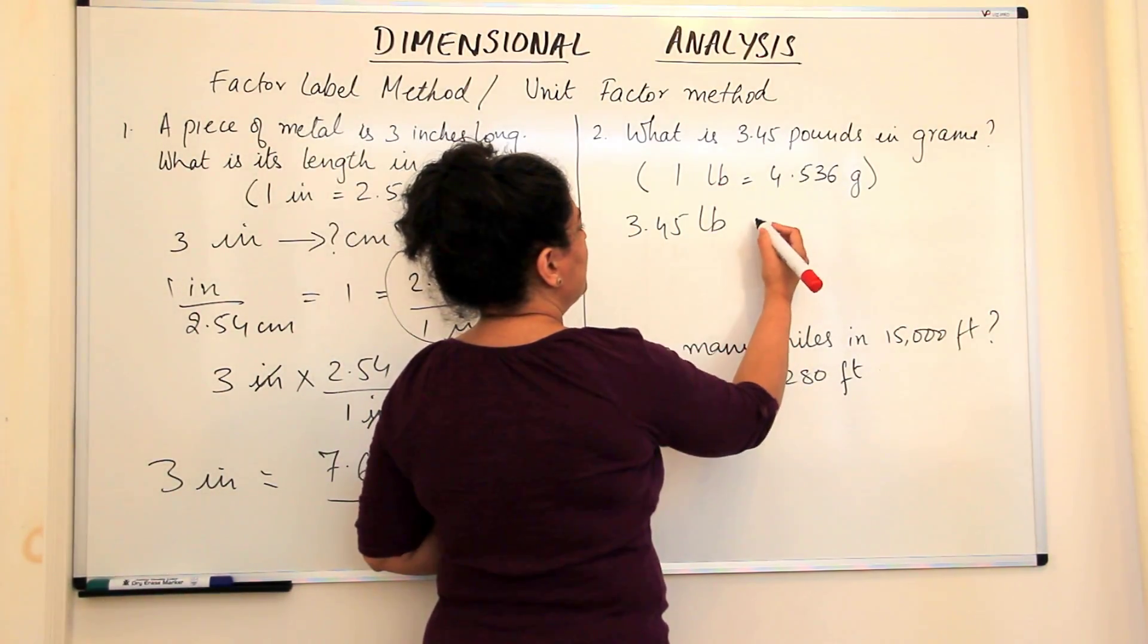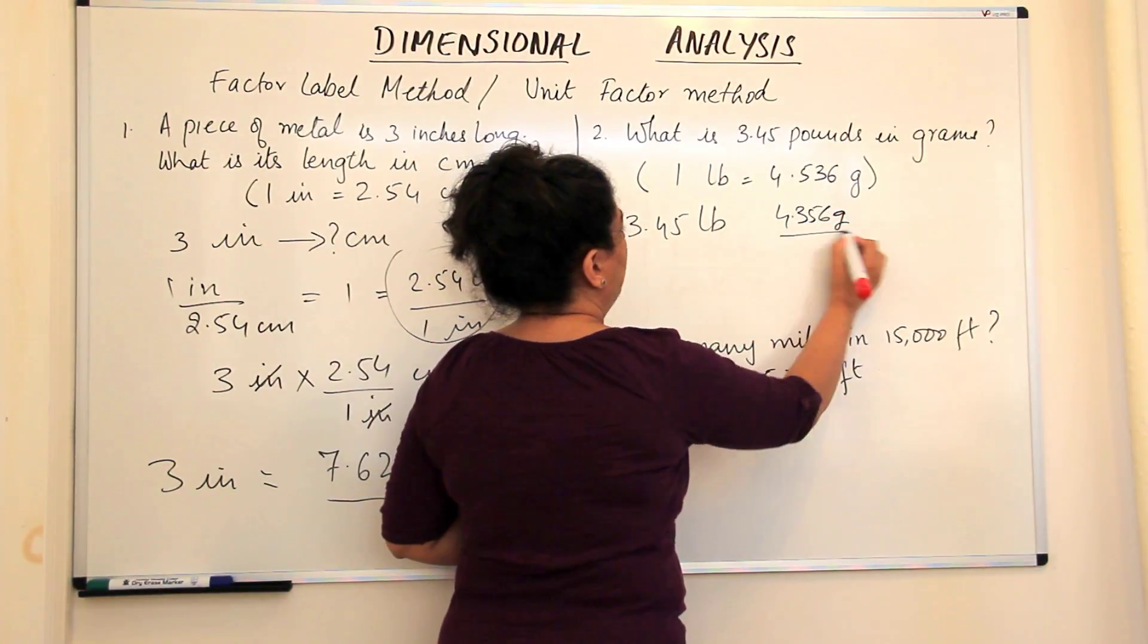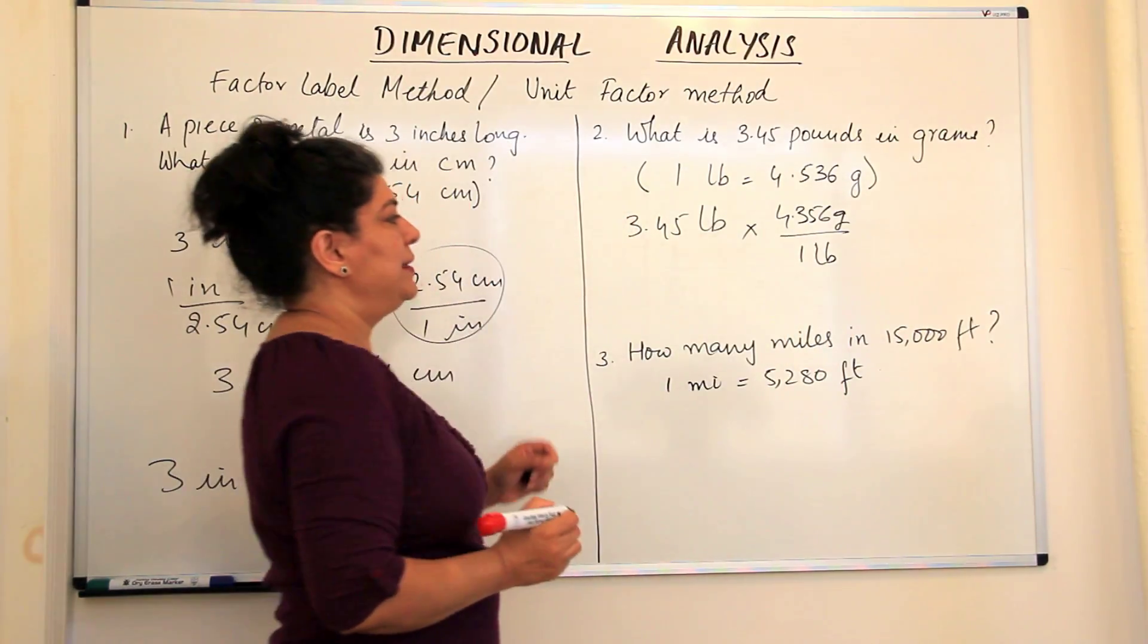If I want to cancel out the pound, what are the two unit factors which I'll get? 4.536 grams upon 1 pound. If I multiply by this unit factor, the pound comes in the denominator.